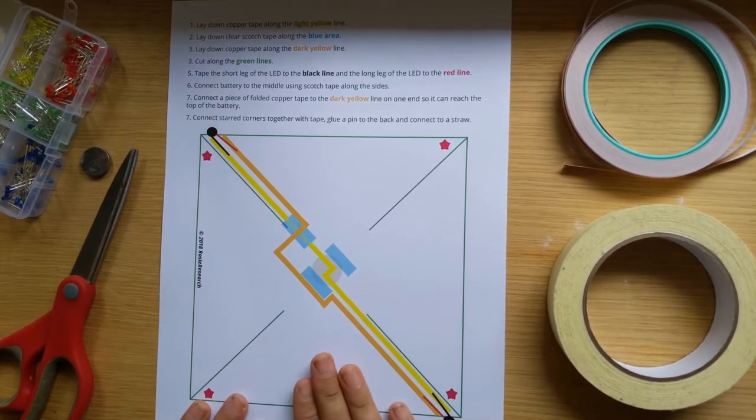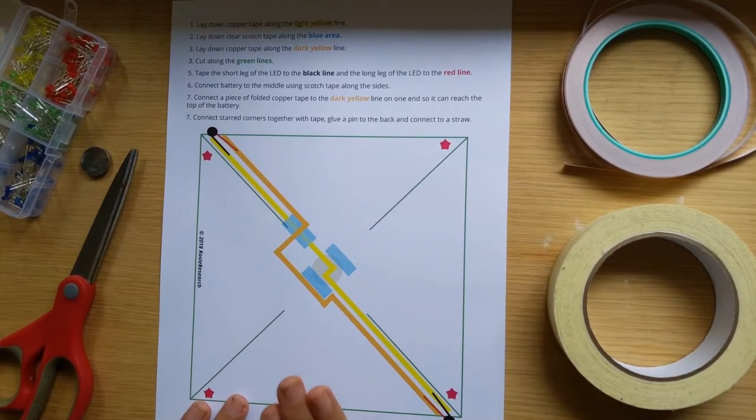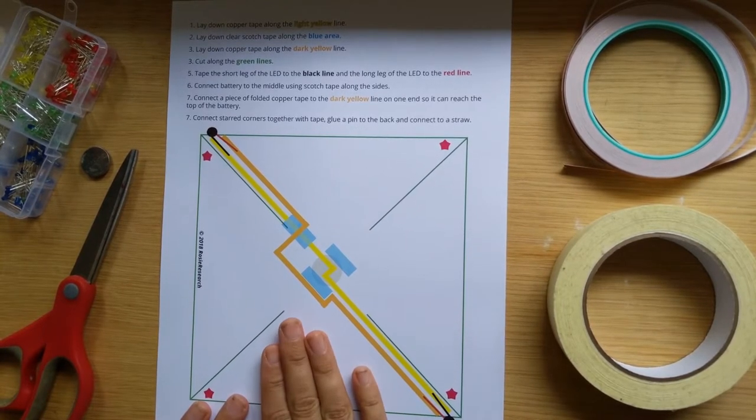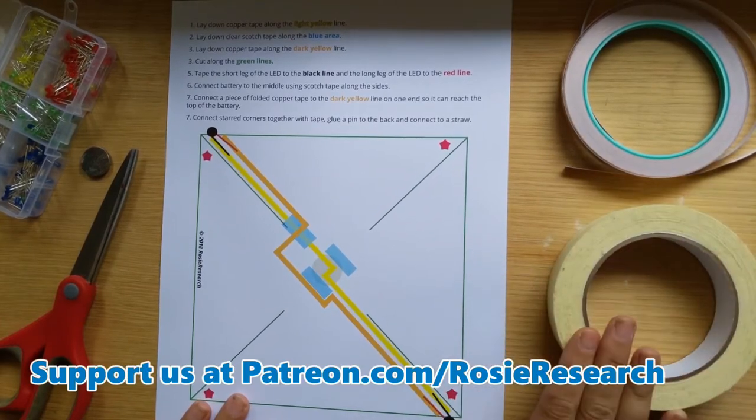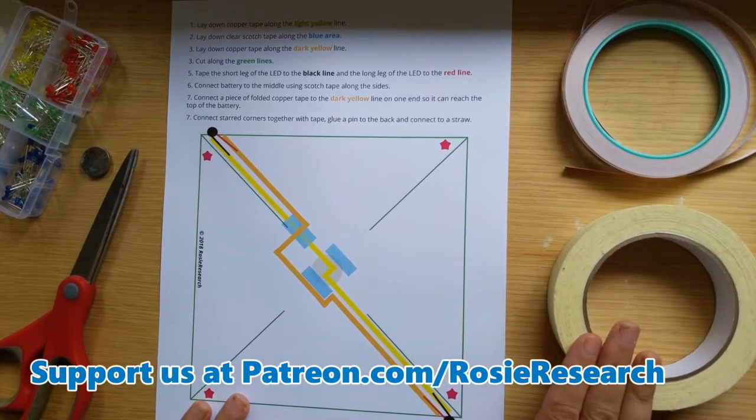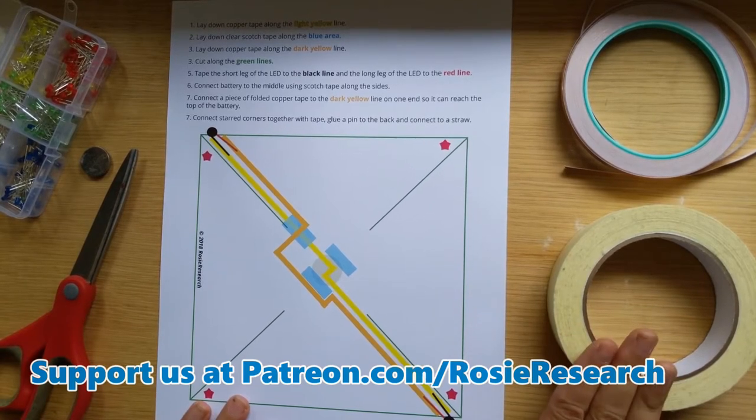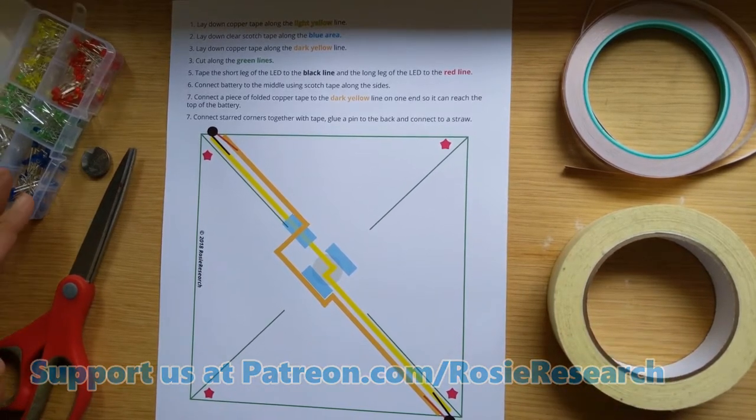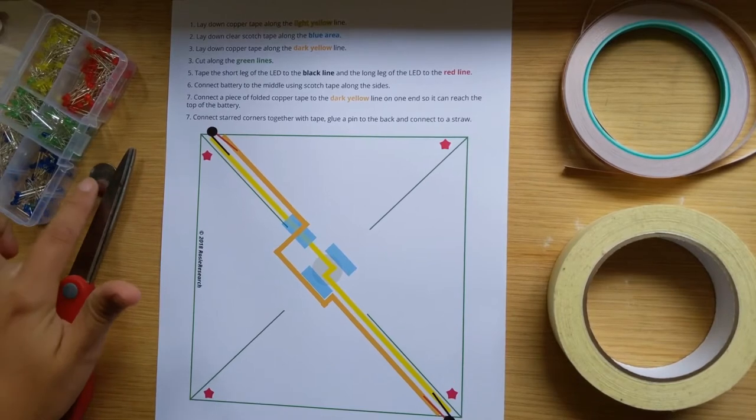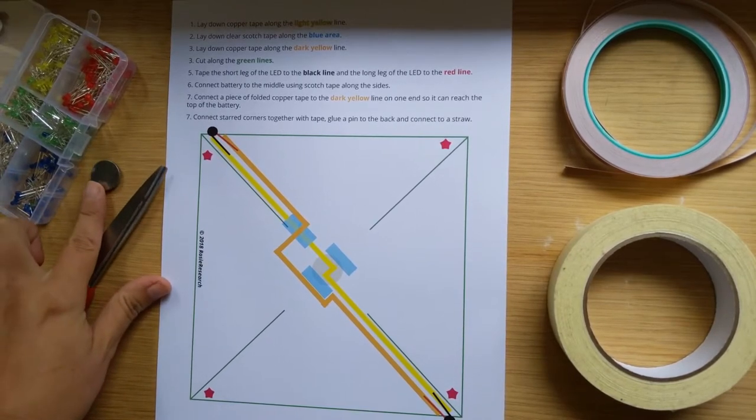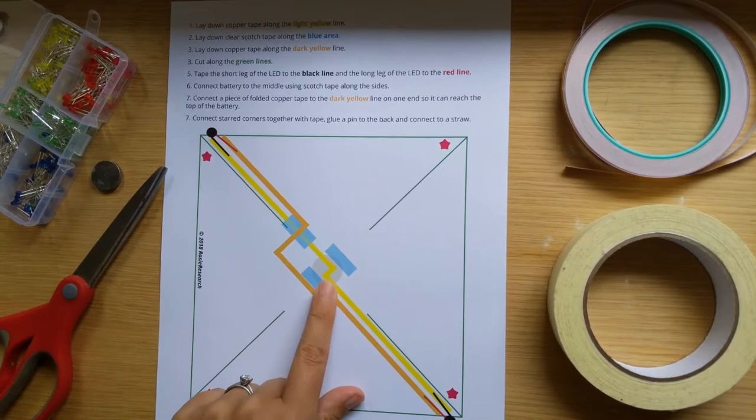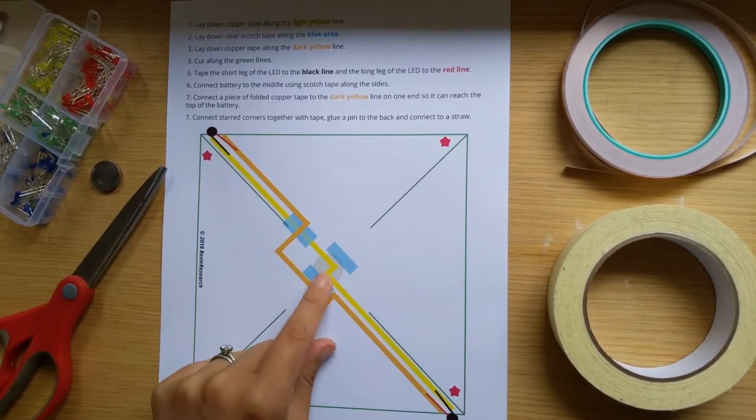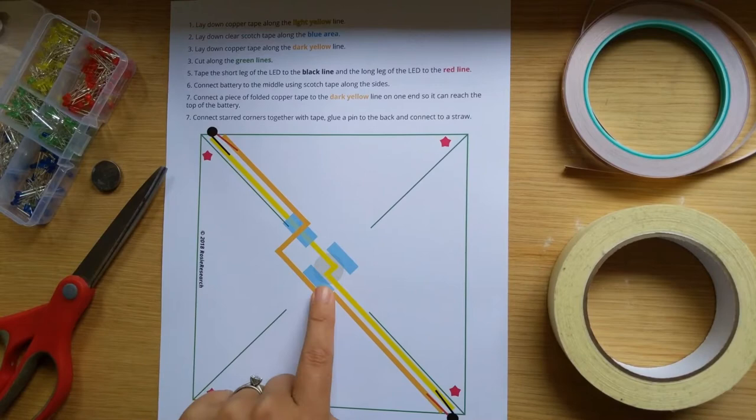So this one is going to make a little pinwheel. To make it light up, you're going to need our printout at patreon.com/rosieresearch. You'll need some conductive tape, copper tape. You'll need non-conductive tape, paper-based or plastic-based tape. Scotch tape or masking tape are great for that. You'll need two LEDs and a CR2032 battery and some scissors. And in addition to this, you're also going to need a push pin and a straw that we can put this into at the very end.